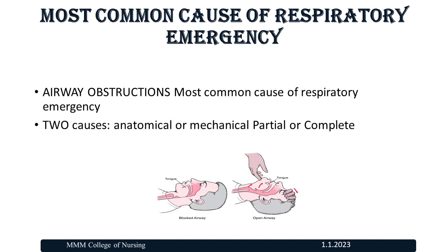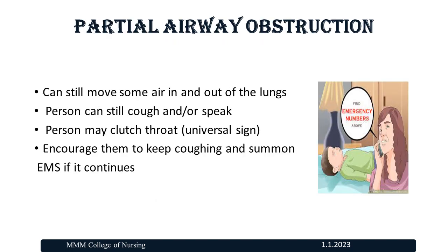Most common cause of respiratory emergency: airway obstruction — either anatomical or mechanical, and partial or complete. With a partial airway obstruction, the person can still move some air in and out of the lungs, and can still cough or speak. The person may clutch their throat — the universal sign. Encourage them to keep coughing and summon emergency if it is continuous.